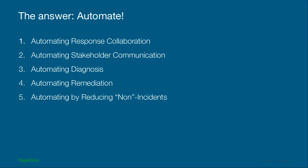In summary, there are a lot of things you can do using automation to cut down on operational pain. To reduce operational load — other than fixing the underlying problem, which is of course the first thing you should do — you can automate response collaboration, automate communication, surface important information for diagnostics to cut down time to root cause, automate remediation steps, and cut down noise and toil by reducing non-incidents. All of these techniques allow you to reduce the time teams spend on manual work and allow them to spend more time on innovation, fixing things faster, and creating a much better experience for your customers.